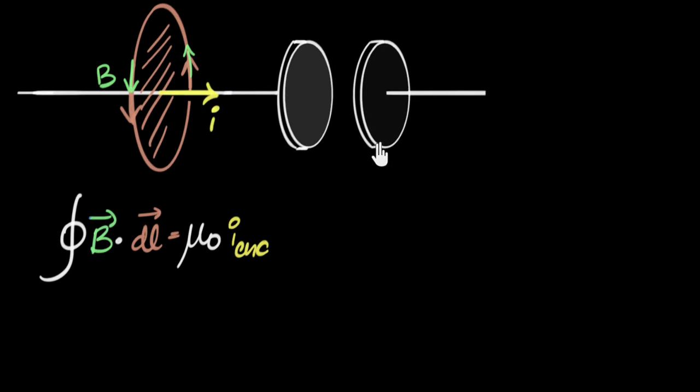All right. So we have imagined two circular plates of a capacitor and let's say that our current over here is increasing, just for the sake of example. So the capacitor is charging. And now what we'll do is we'll focus on two points. One point over here, let's call it point P. And another point somewhere in between the capacitor but at the same height. Let's call it point Q.